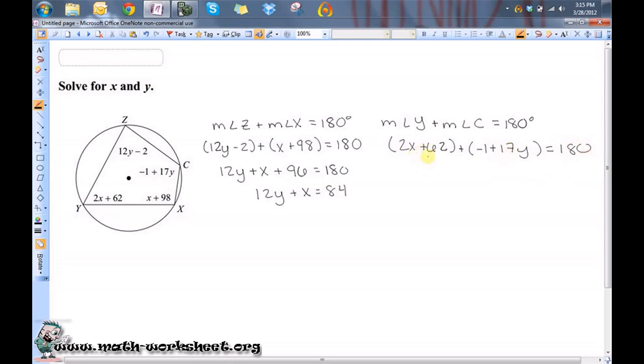Let's clean this up by combining like terms. So I have 2X plus 17Y plus 61 equals 180. And I subtract 61 from both sides.